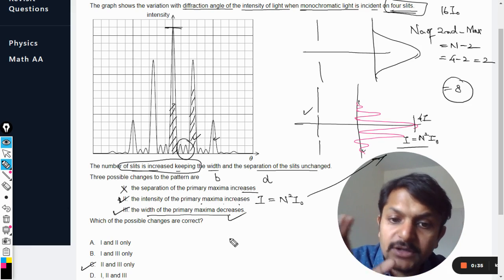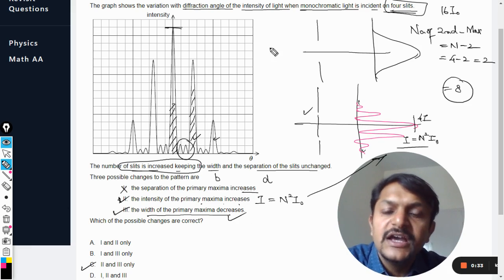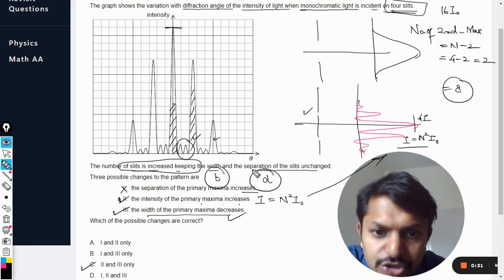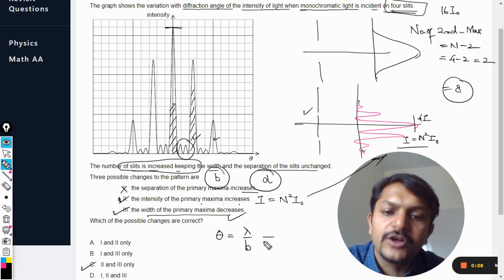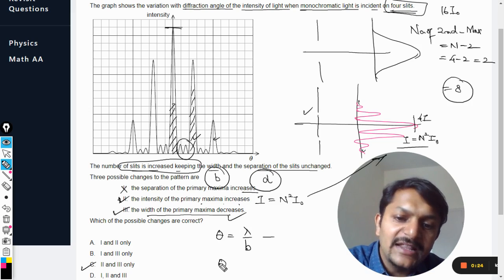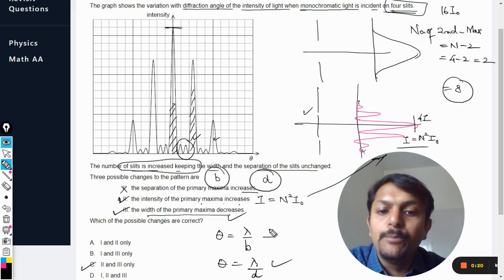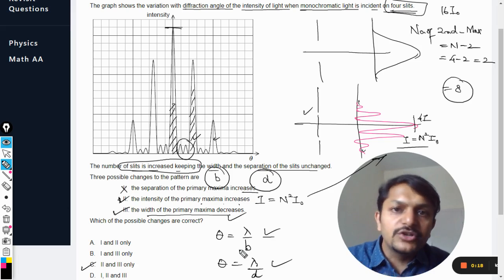Yeah, the next thing that I want to emphasize here is that b and d are not changed, thereby the angle that is lambda by b, like angle for diffraction, and the angle in the case of interference which is lambda by d, both of them do not change because neither the wavelength changes nor the b changes nor the d changes.